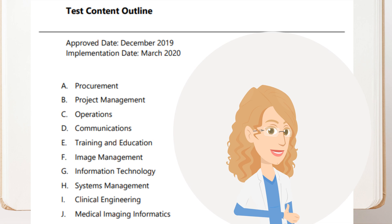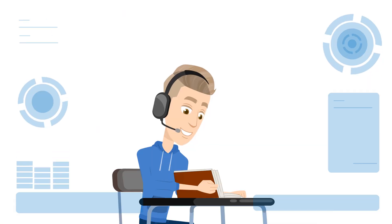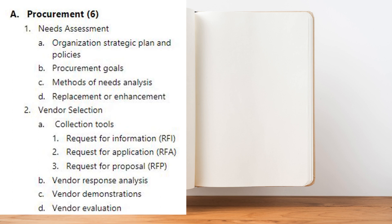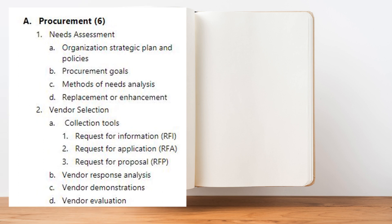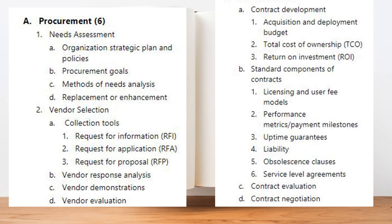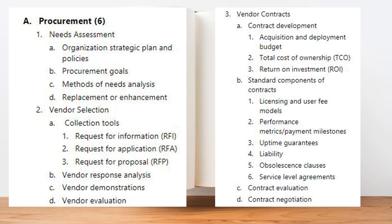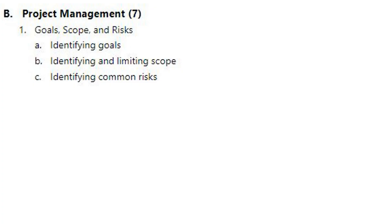The ABII also details specific subtopics that will be tested. On procurement, there will be questions on needs assessments including goals and methods, vendor selection including the RFP process, and development and evolution of vendor contracts including TCO, ROI, licensing, and SLAs.